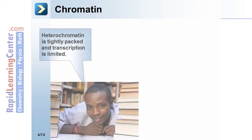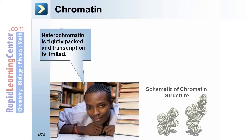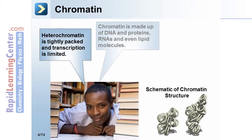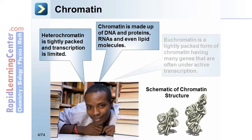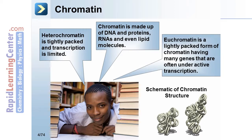Chromatin: heterochromatin is tightly packed and transcription is limited. Chromatin is made up of DNA and proteins, RNAs, and even lipid molecules. Euchromatin is a lightly packed form of chromatin having many genes that are often under active transcription.